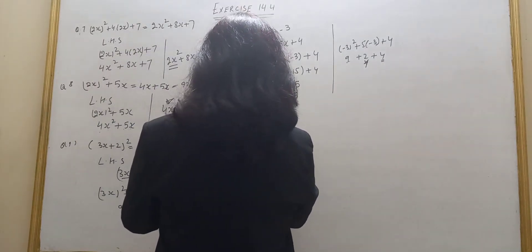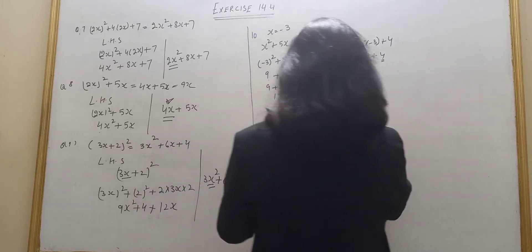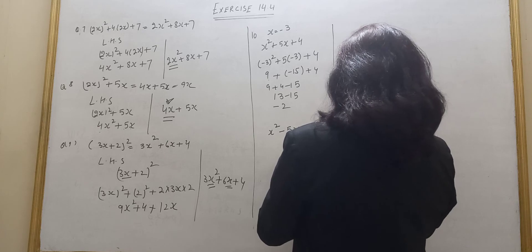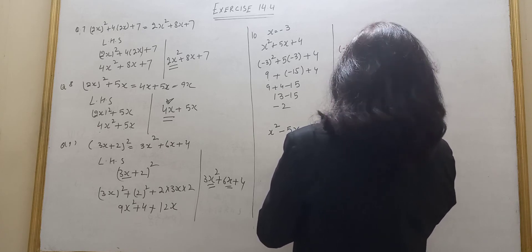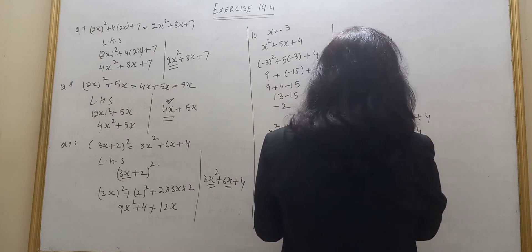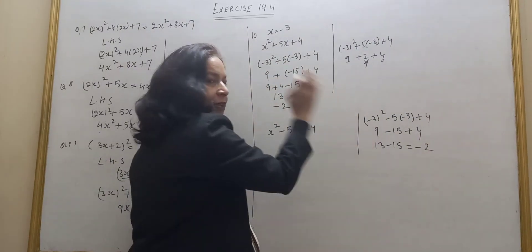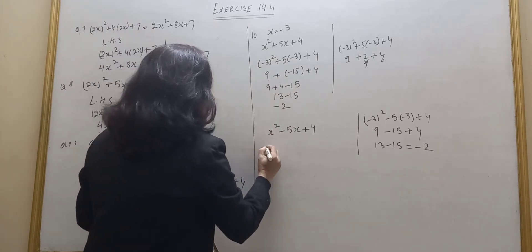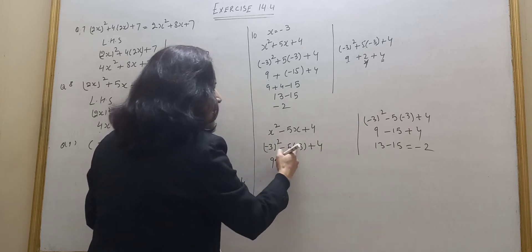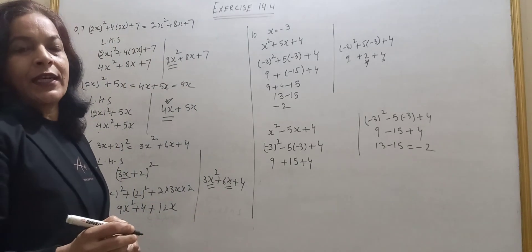Part b: x² minus 5x plus 4, substituting x = minus 3. It should be minus 3 squared minus 5 into minus 3 plus 4. They have written 9 then minus 15 plus 4, equal to 9 plus 4, which is 13, minus 15, equal to minus 2. Now let's solve it correctly: minus 3 squared is 9, and minus into minus 5 into minus 3 is plus 15, plus 4. So 9 plus 4 is 13, plus 15 is 28.